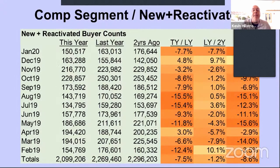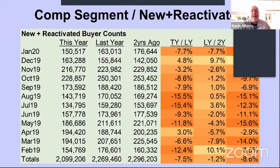This is my comp segment analysis for new and reactivated buyers, looking at what happened every month. What I see is that in the past year, this company kept cutting back on their marketing dollars. As a result, they kept getting fewer and fewer new and reactivated buyers — the exact opposite trend they need. I know there's a marketing issue I'm going to have to talk about.